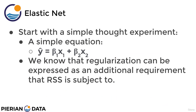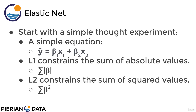Let's start with a simple thought experiment. We're going to deal with only two features, which means we're going to solve a simple equation where ŷ equals β₁x₁ plus β₂x₂. We know that regularization can be expressed as simply an additional requirement we're subject to for the residual sum of squares. L1 is going to constrain the sum of absolute values, and L2 is going to constrain the sum of the squared values.